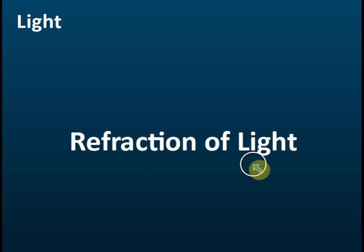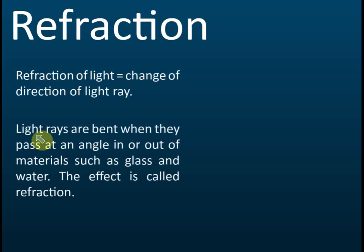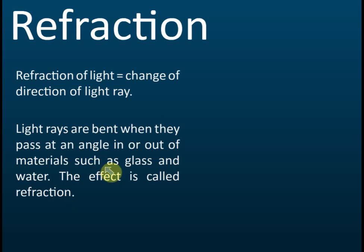Refractions of light — what does it mean? Refraction of light means the change of direction of the light ray. Light rays are bent when they pass at an angle in or out of materials such as glass and water, and this effect is called refraction. So refraction is the change of angle or bending of the light ray when it moves in or out of a transparent material.